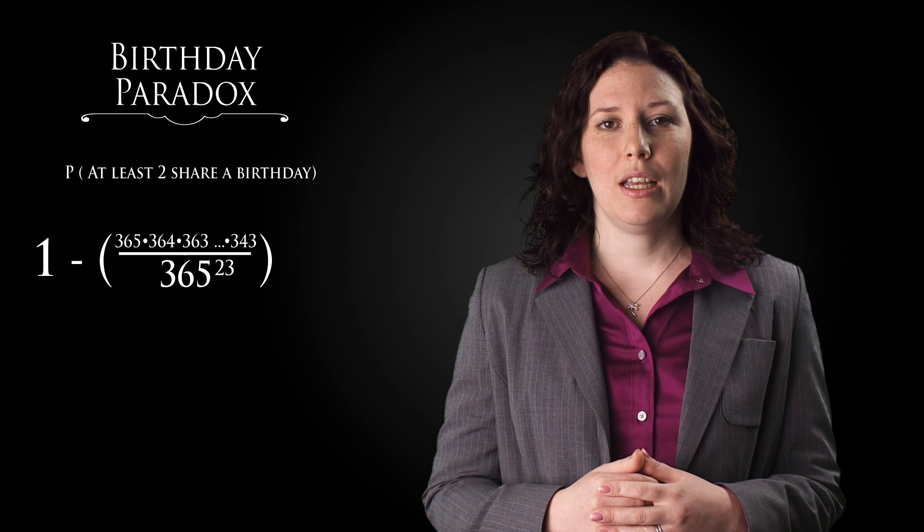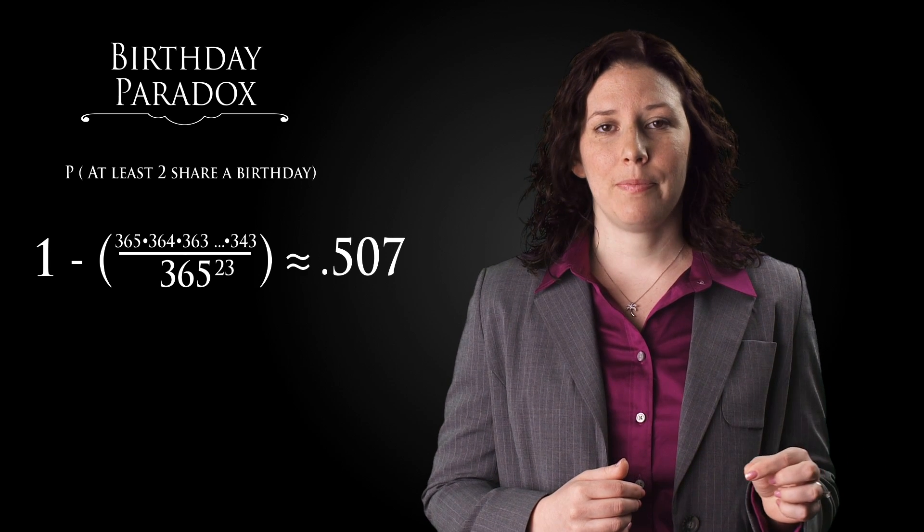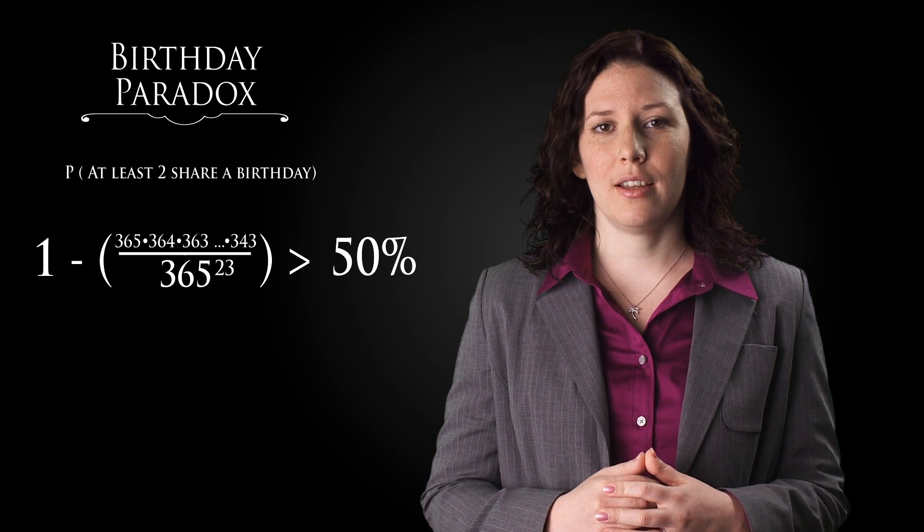As we add more people into this scenario, this pattern would continue out to the 23rd person, and that would give us 343 possible birthdays out of 365. Multiplying this large fraction together and subtracting from one yields a probability of .507 — that's a greater than 50% chance that two people share the same birthday, which is more likely than flipping heads on a fair coin.